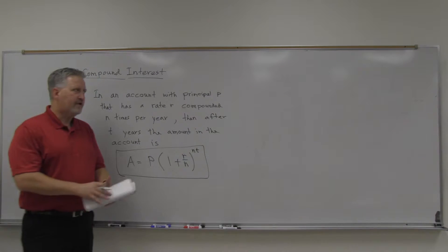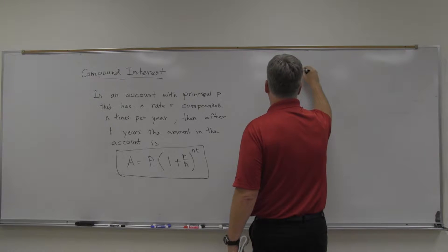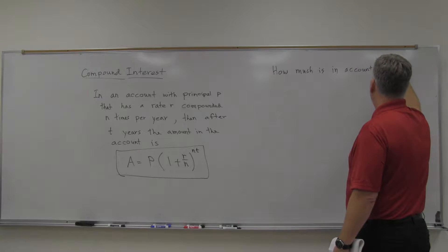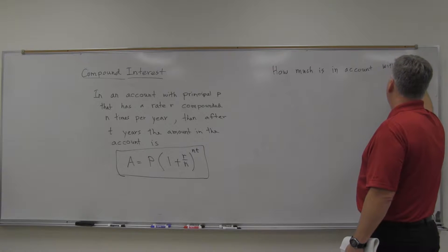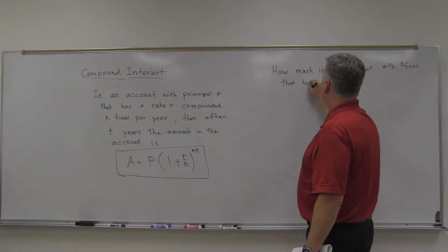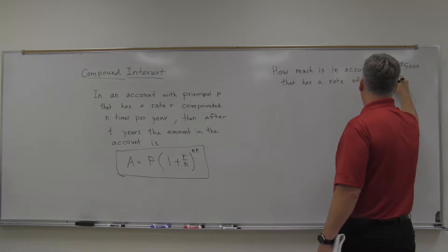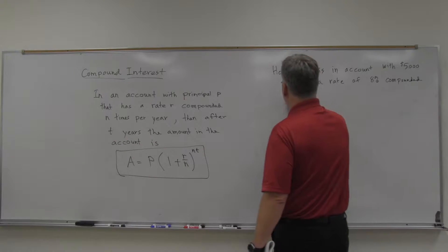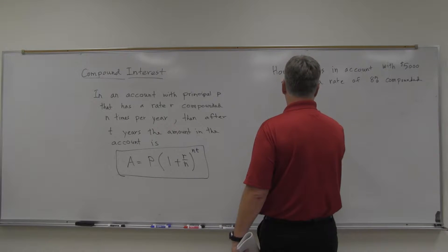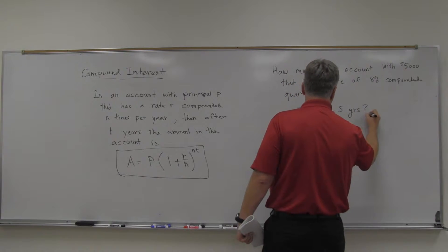So let's take a couple of looks at an example here. How much is in an account with $5,000 that has a rate of 8% compounded quarterly. Number one, after, let's say, five years. How much is in the account?